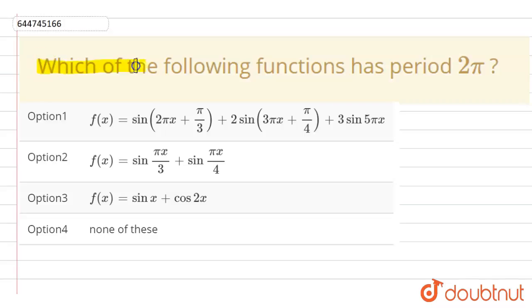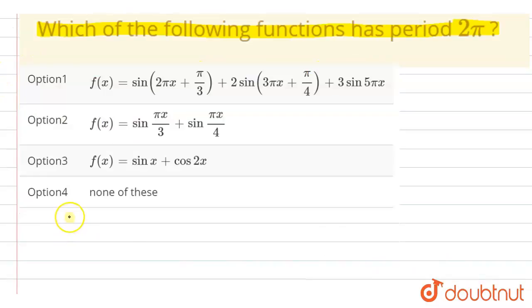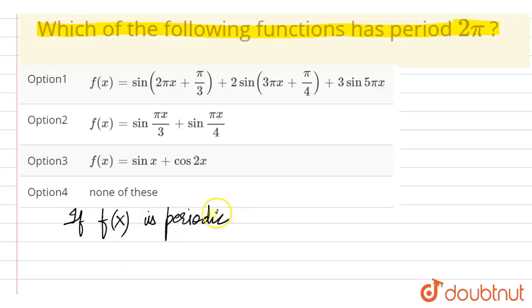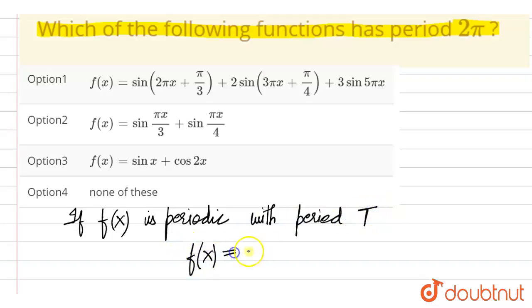The question is: which of the following functions has period 2π? These are the options. Now, if f(x) is periodic — if any function f(x) is periodic with period T, then f(x) should be equal to f(x + T). So here we need to find the function which has period 2π.